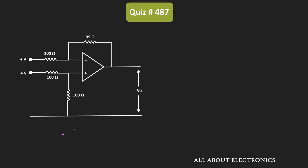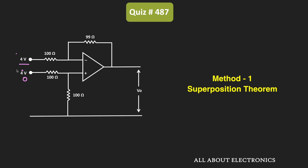To find the output voltage, we have two options. In the first option, we can apply the principle of the superposition theorem. We consider only one voltage source at a time and set the second voltage source to zero, finding the output voltage Vo1. Similarly, we consider only the second voltage source and set the first to zero, finding Vo2. The summation of Vo1 and Vo2 will represent the overall output voltage.